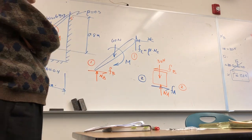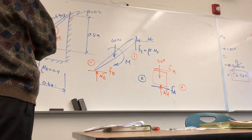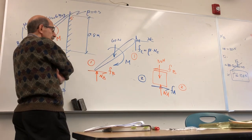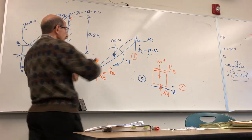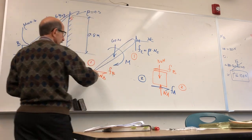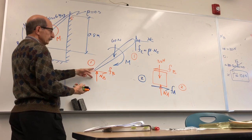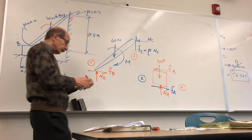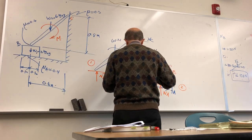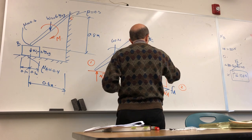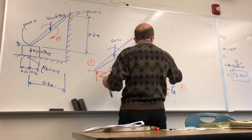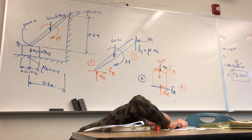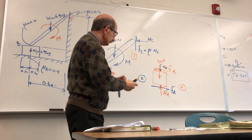A student asks why the weight of the bar isn't acting on the box. The answer: like frames, the connection between the rod and box is only at point B — so only the contact forces (NB and friction) transfer between them. The student's actual question was about the missing NB force, which was accidentally omitted from the diagram and should be included.